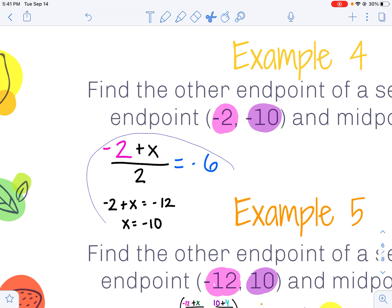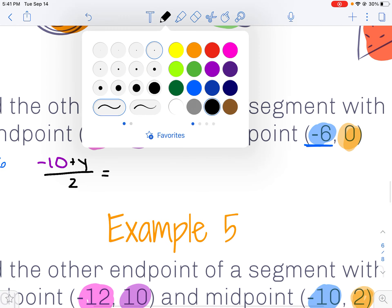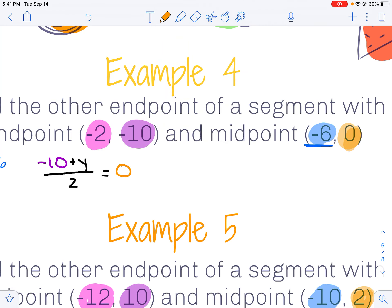Repeating that same process for my y value gives me my known y value plus my unknown y value, all divided by 2, has to work out to be the y value of my midpoint, 0.